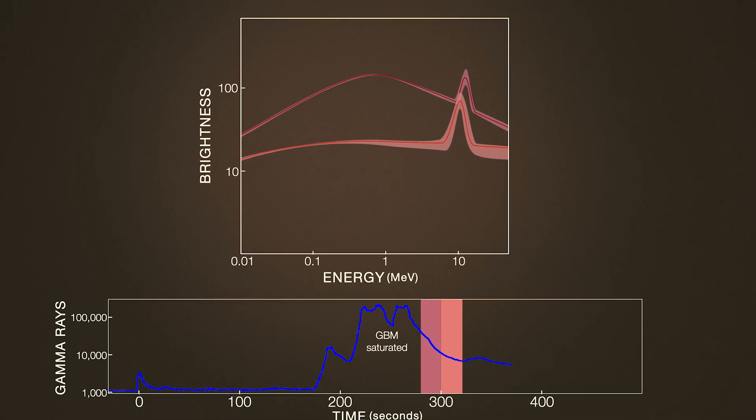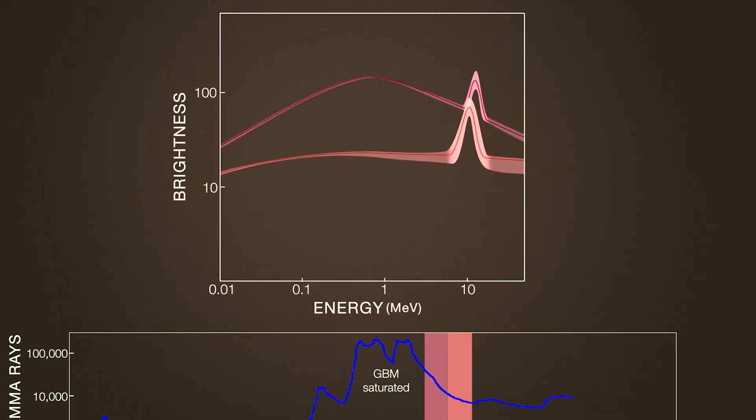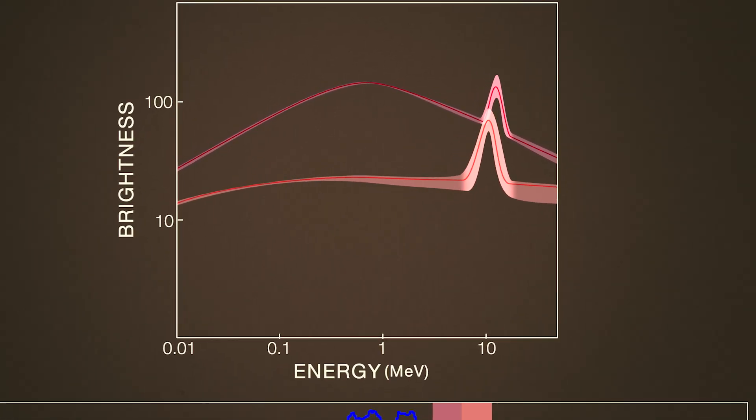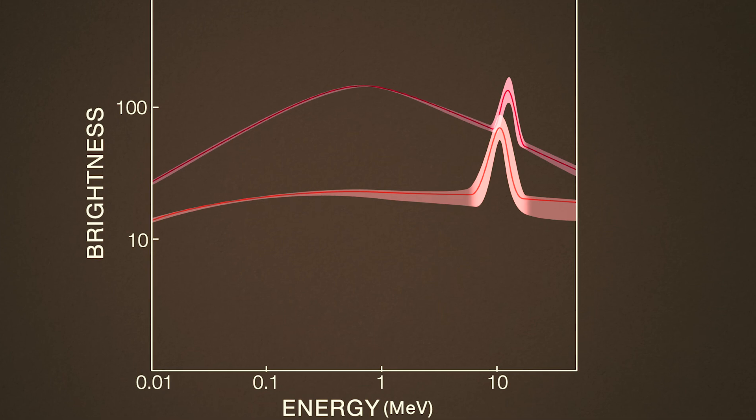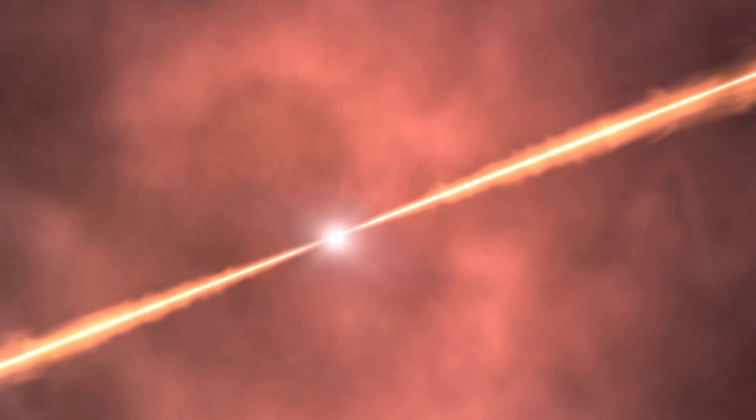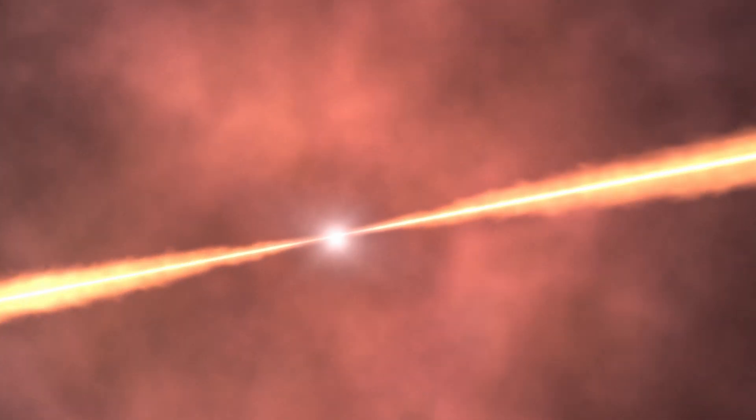It's an emission line, a narrow band of enhanced brightness in light spread out in a spectrum. It only lasted 40 seconds, but it's the first one ever seen with high confidence during a burst. It gives scientists insight into processes within parts of the jet where gamma rays, the highest energy form of light, come from.